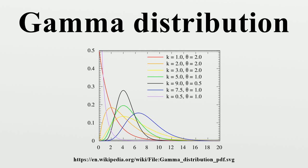Maximum likelihood estimation: the likelihood function for n i.i.d. observations leads to the log-likelihood function. Finding the maximum with respect to θ by taking the derivative and setting it equal to zero yields the MLE of the θ parameter. Substituting into the log-likelihood and maximizing with respect to k by setting the derivative to zero yields an equation with no closed form solution for k, but the function is numerically well behaved and can be solved using Newton's method. An initial value of k can be found using the method of moments, or using an approximation that is within 1.5% of the correct value.